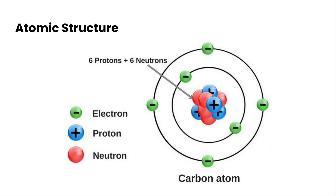The other type of subatomic particle found in an atom is an electron. Electrons are found in specific energy levels that surround the nucleus. You can see we've got two energy levels surrounding our nucleus here, with these green dots representing our electrons. Electrons have a negative charge. For example, this atom here is a carbon atom, and it has six protons and six neutrons. Counting up the electrons: two in the first energy level and four more in the next, for six electrons total.